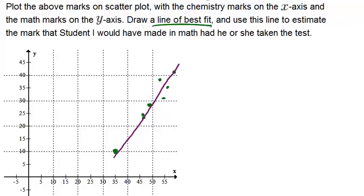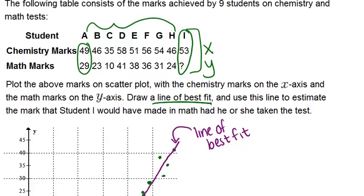So I would say that that line is pretty close to a line of best fit. Now that we have that, the line of best fit, we can use to try to figure out that missing point in the table. We knew that student I got a 53 in chemistry. And we're trying to figure out what they probably would have gotten in math.